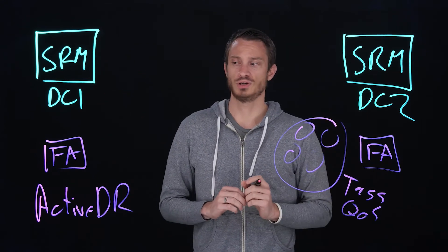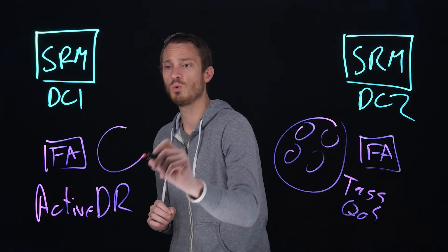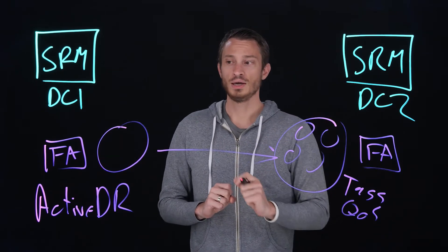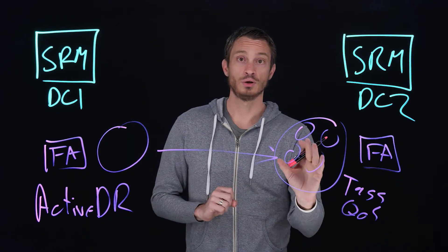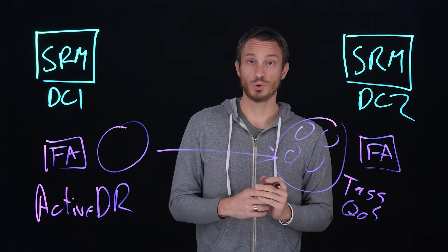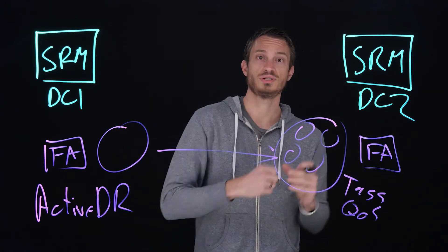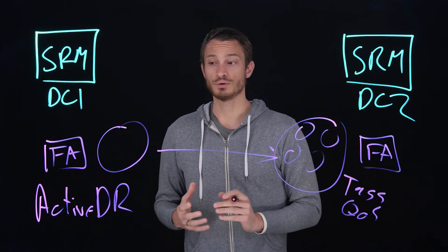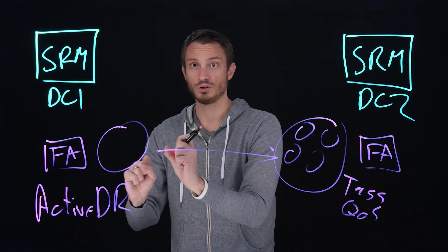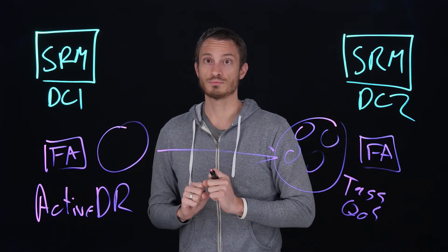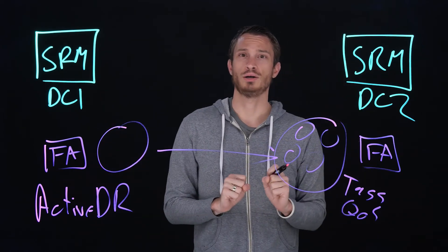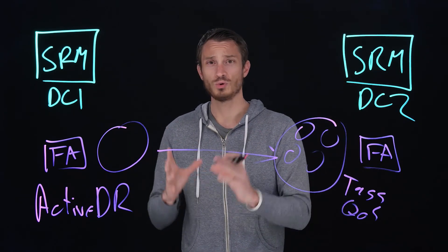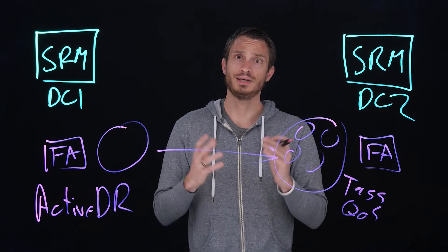When SRM interacts with Active DR, it takes the source pod on this site that is linked to what's called a replica pod. For a test, SRM will promote this pod, taking the latest point in time and making it available to this site to be tested and verify your recovery plan works. In a failover, it will demote this pod, bringing all the volumes down from that host environment, and then promote the DR pod, making it available. This is a very simple procedure, and Active DR was built with Site Recovery Manager in mind.